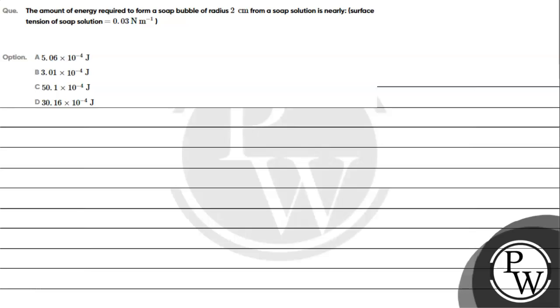Hello, let's read the given question. The question says: the amount of energy required to form a soap bubble of radius 2 centimeters from a soap solution is nearly? Surface tension of soap solution is 0.03 newton per meter. Option A: 5.06 × 10^-4 joule. Option B: 3.01 × 10^-4 joule. Option C: 50.1 × 10^-4 joule. Option D: 30.16 × 10^-4 joule.